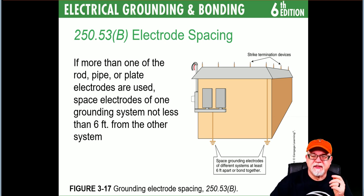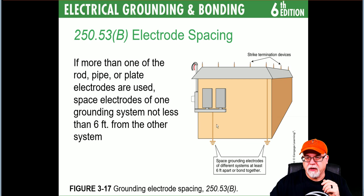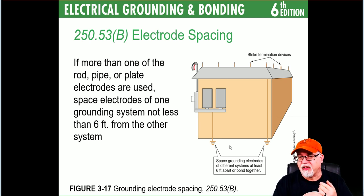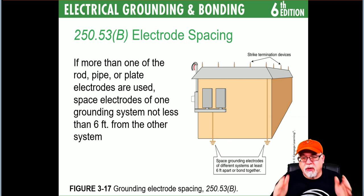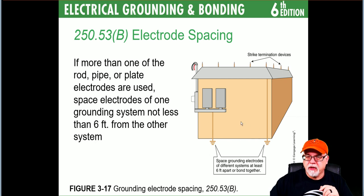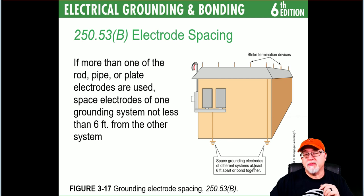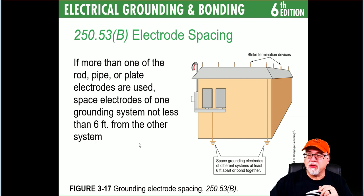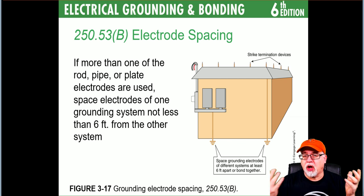250.53(B) — electrode spacing: if more than one rod, pipe, or plate is used, they must be at least six feet apart. This also applies when you have electrodes for a separate lightning protection system — those electrodes would also need to be at least six feet apart, or you bond them together. Most of the time I use one set of electrodes and bond all systems together to utilize those same electrodes.